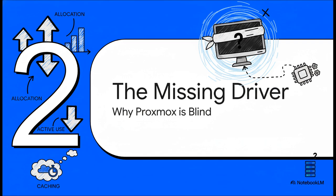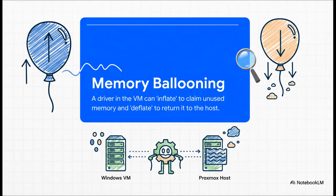There is one absolutely critical component that really explains why Proxmox seems like it's flying blind, and it all comes down to a tiny but super important piece of software that, a lot of the time, is just not there. That missing piece is what allows for something called memory ballooning. It's a special driver that lives inside your Windows VM. It can inflate a balloon to grab hold of memory that's not being used, and — this is the important part — it can deflate that balloon to give memory back to Proxmox. It's the negotiator between the two.